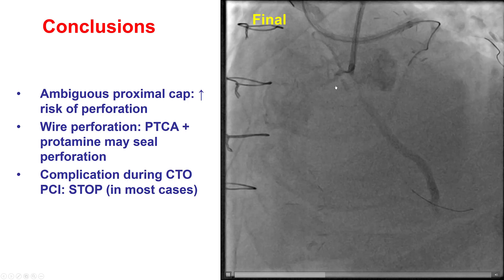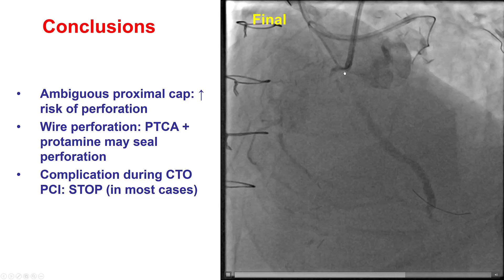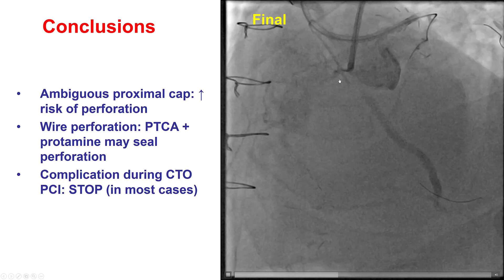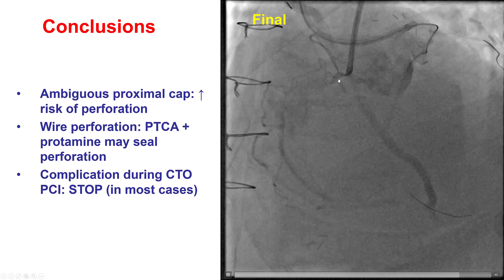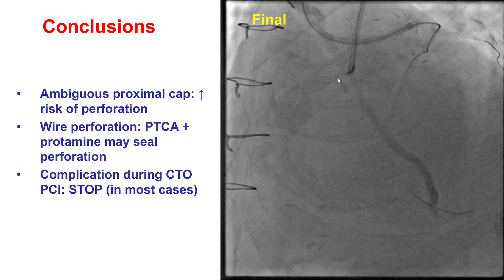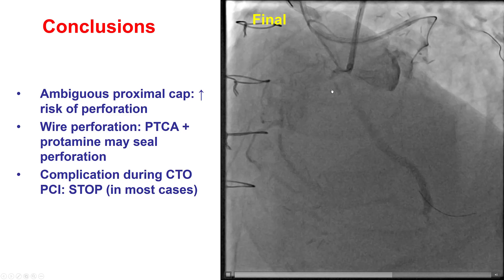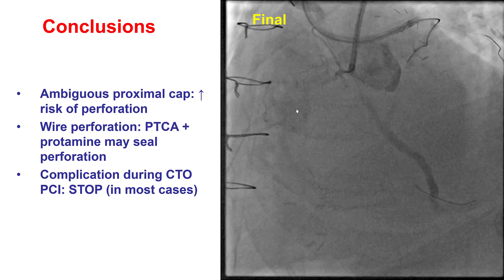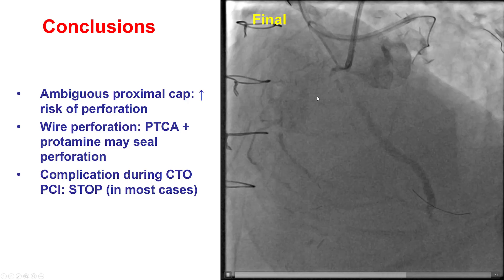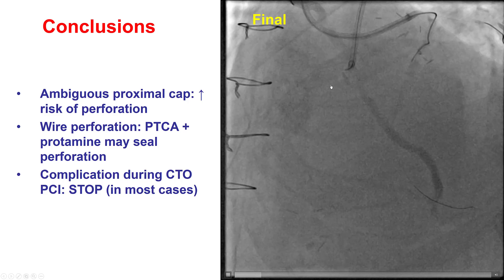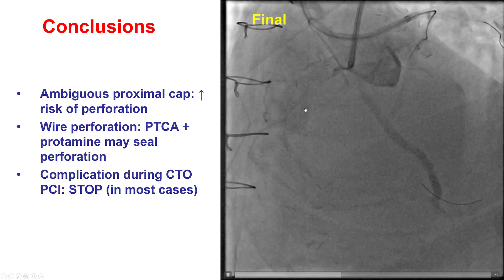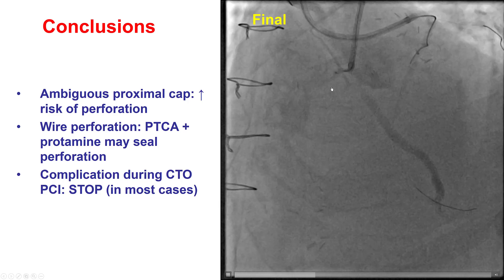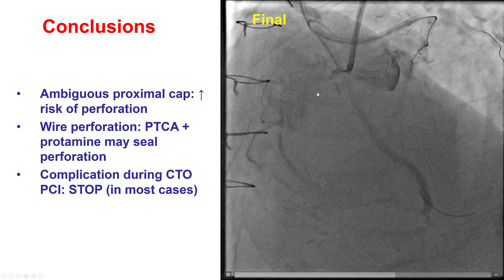Several lessons from this case. First, proximal cap ambiguity can predispose to perforation. It is important not to try to advance equipment until the ambiguity is clarified. In this case, it appeared as if the wire was moving along the course of the vessel, but retrospectively, the wire might have gone through a bridging collateral, which potentially led to the perforation. If there is a wire perforation, quite often it may seal by prolonged balloon inflation and reversing anticoagulation, as happened in this particular case.